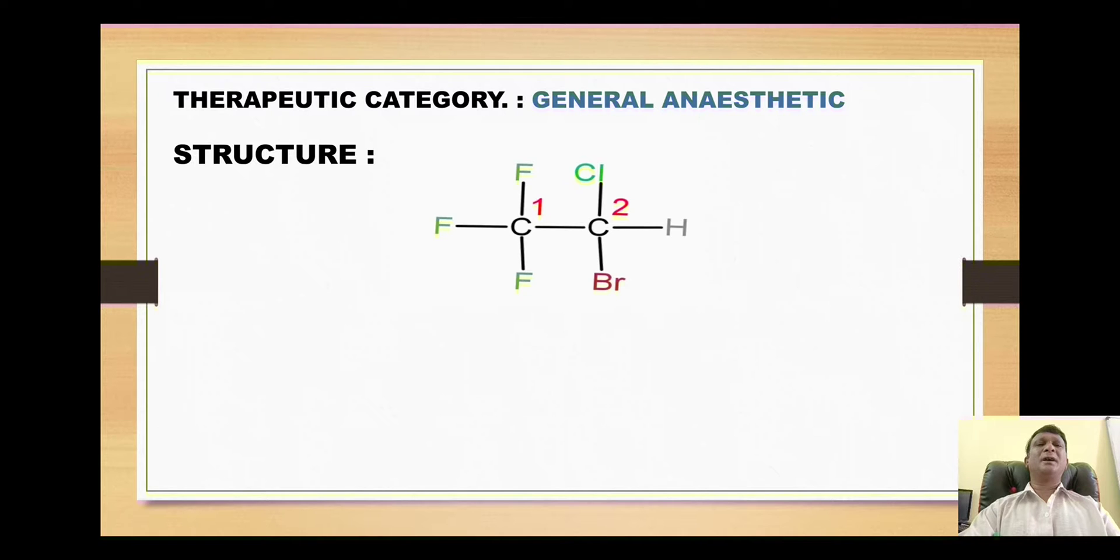The 'halo' stands for presence of halogens like fluorine, chlorine and bromine, and the 'thane' stands for presence of the ethane nucleus - a two carbon chain. So here it is a two carbon chain attached with five halogens, called halothane.